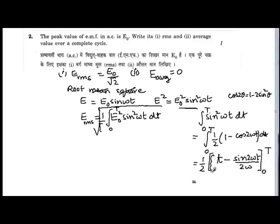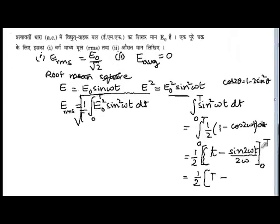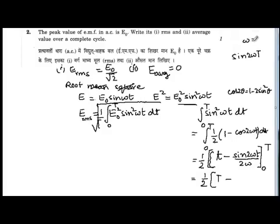So substituting the limits over here gives us ½(t - sin 2ω). And when you substitute the upper limit you have ωt. Now you know that ωt is equal to 2π/T.